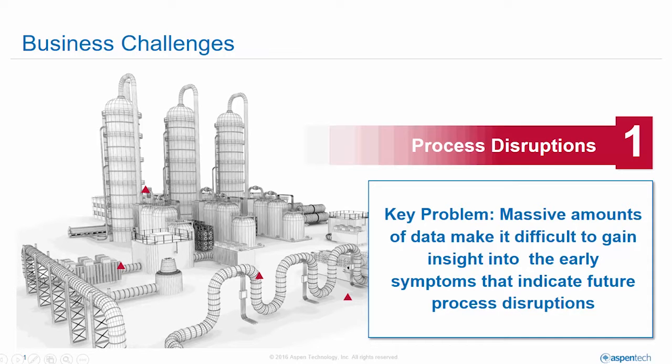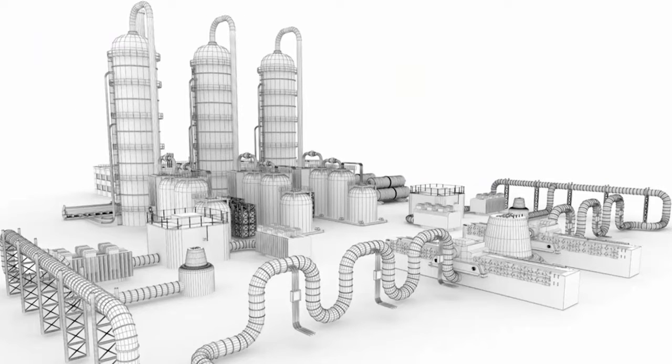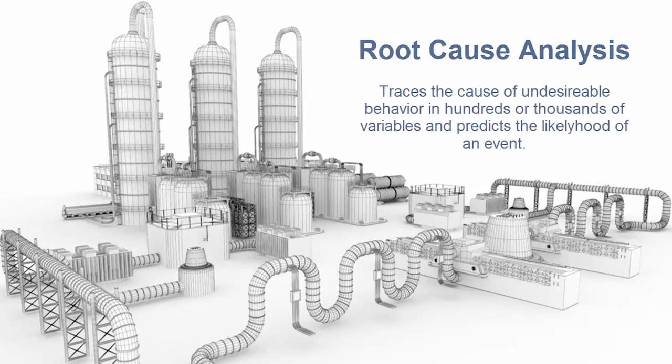Among the top concerns regarding asset utilization is the issue of process disruptions. One of the things that makes this a difficult challenge is the sheer volume of data that must be analyzed. A big need in this space is the ability to use process data to predict future disruptions and take proactive steps to eliminate it or reduce its impact.